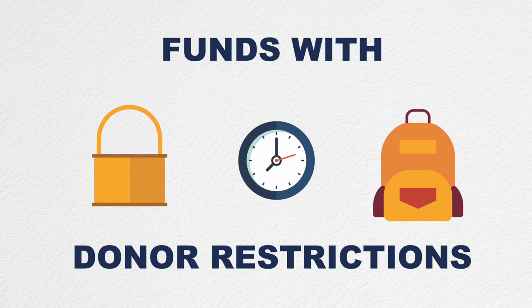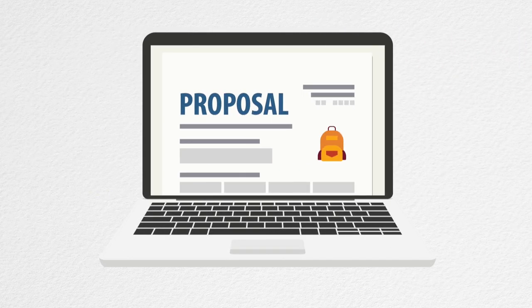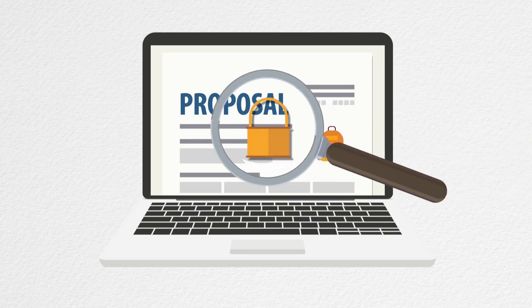When planning and budgeting, be aware of any and all time and activity restrictions present on your funds. And remember, all income must be recognized or recorded in your accounting records in the year that funding is received, regardless of when the related expenses will occur. When researching and applying for grants, consider any challenges that potential restrictions could present to your organization.